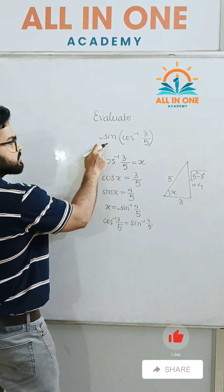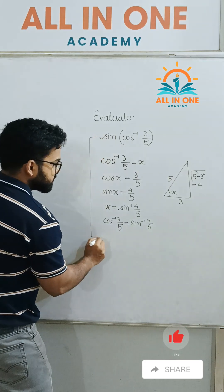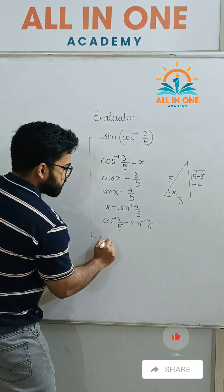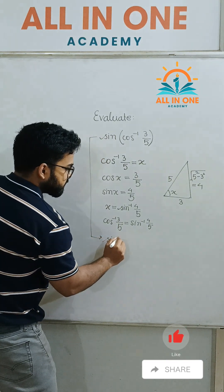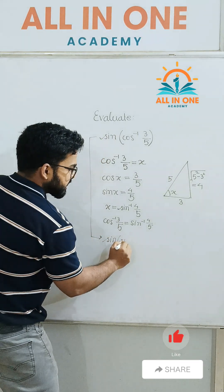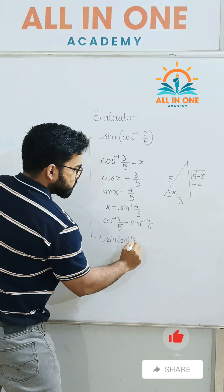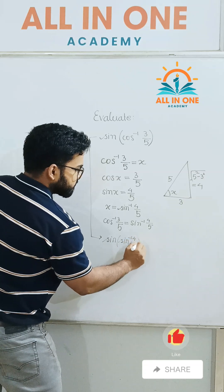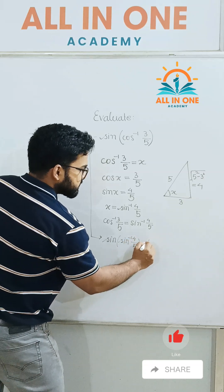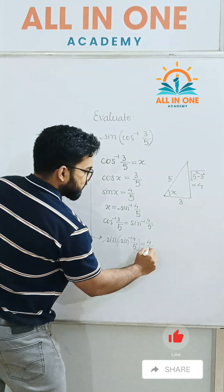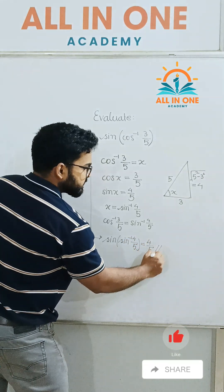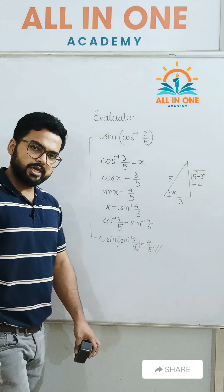Now we have our original expression: sine of sine inverse (4/5). This gives us 4/5. So this is the answer. Thank you.